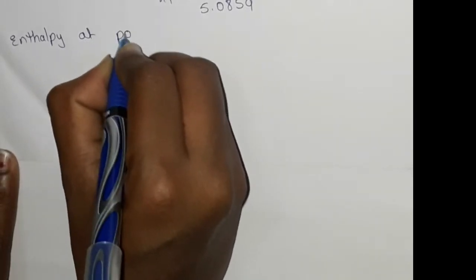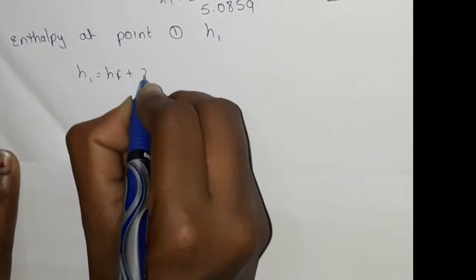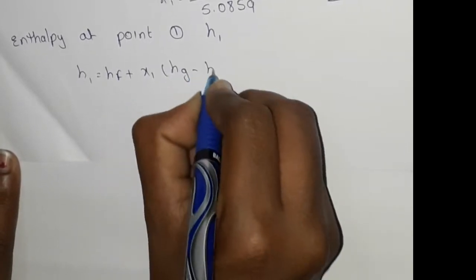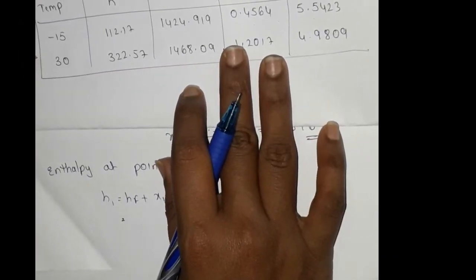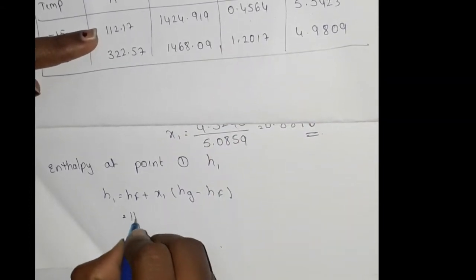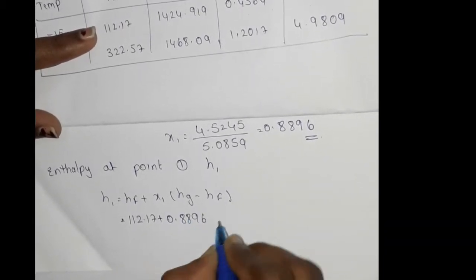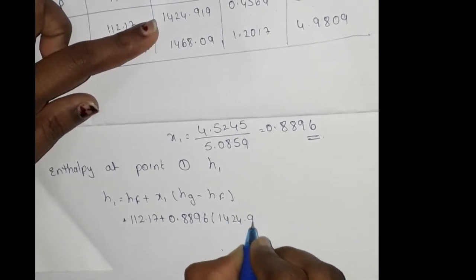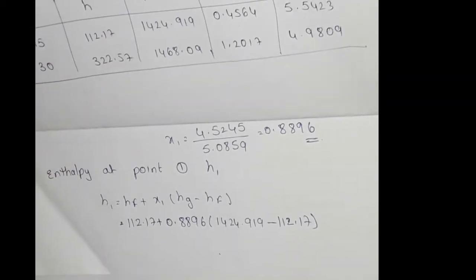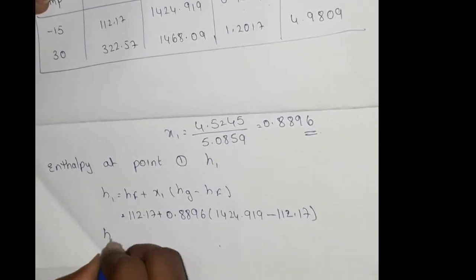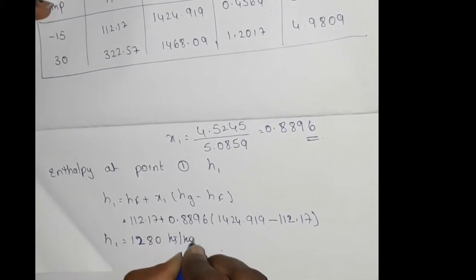Next, find enthalpy at point 1. H1 equals Hf plus x1 into (Hg minus Hf). At minus 15 degrees centigrade: Hf equals 112.17, x1 equals 0.8896, and Hg equals 1424.919. So H1 equals 112.17 plus 0.8896 into (1424.919 minus 112.17). Calculating, H1 equals 1280 kilojoules per kg.